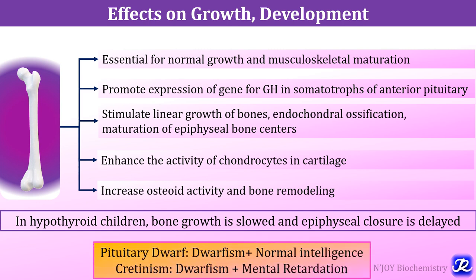There are two types of dwarfism. One is due to lack of growth hormone — the pituitary dwarf — where dwarfism is associated with normal intelligence. In case of hypothyroidism, that is cretinism, dwarfism is associated with mental retardation.